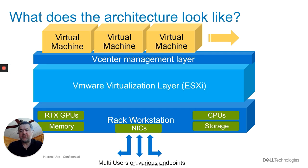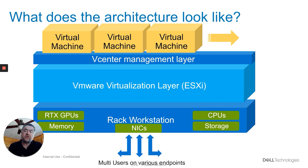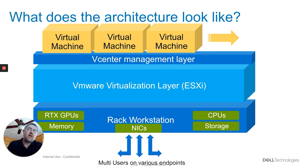A quick look at the architecture: you run a virtualization layer on top of your hardware — at Dell Technologies we use VMware, running ESXi as the hypervisor. vCenter management runs on top of that, and your VMs are managed by vCenter. This lets you control all the infrastructure. Underneath, abstracting the hardware with the hypervisor, you have RTX GPUs — either pass-through or vGPU RTX cards — sharing memory between virtual machines, network interface cards, CPUs, and storage, all shared out very efficiently with near bare-metal performance across multiple users.